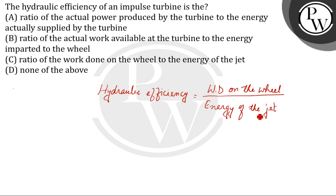So the correct answer here will be option C: ratio of the work done on the wheel to the energy of the jet. Thank you.